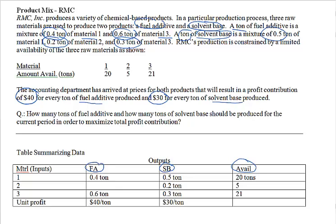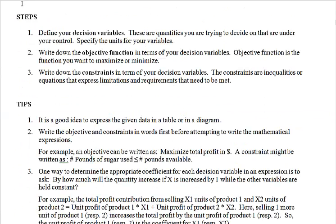There are three steps in formulation of a linear programming model. First, you define your decision variables. Then write down the objective function in terms of your decision variables. And third, write down the constraints. We'll go through these three steps in detail.